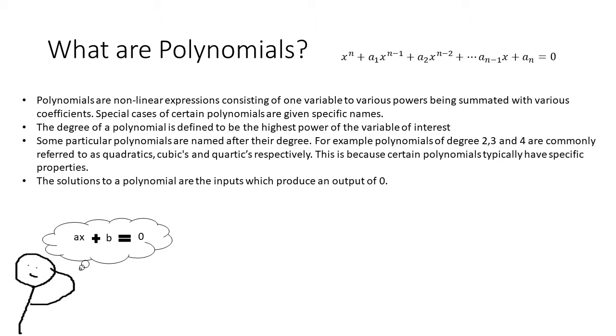To find the solutions or roots of a polynomial, you must equal the output to 0. We can also have polynomials of the 3rd and 4th degree, which are called cubics and quartics respectively.